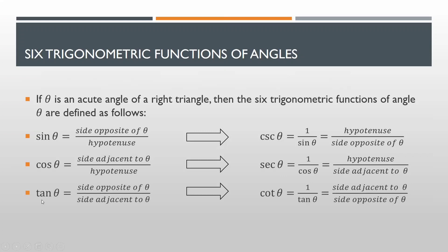Next, we have tangent theta, which is equal to the side opposite of theta over side adjacent to theta. And cotangent theta is equal to 1 over tangent theta, so that will be equal to side adjacent to theta over side opposite of theta.